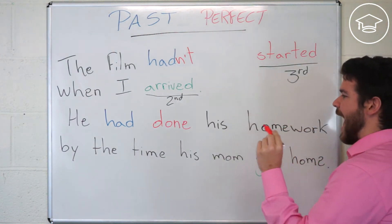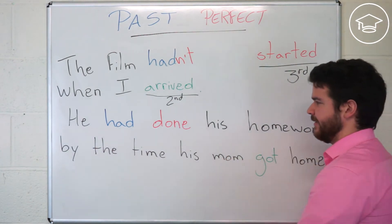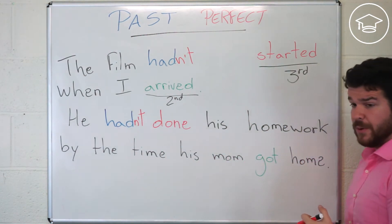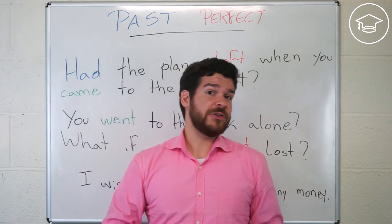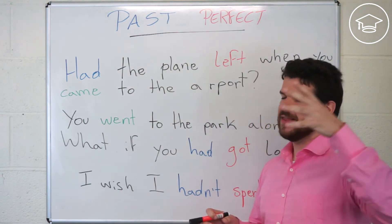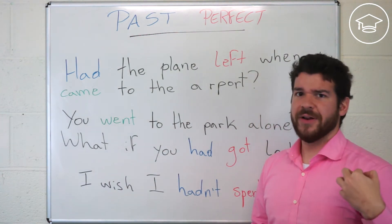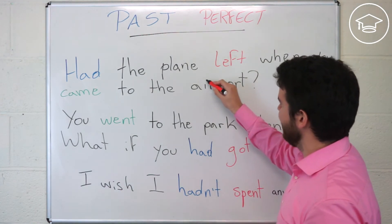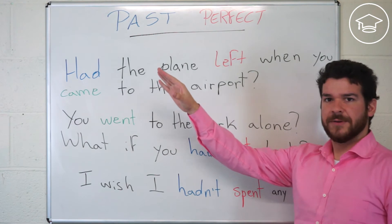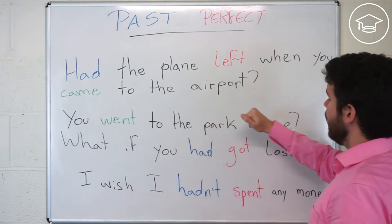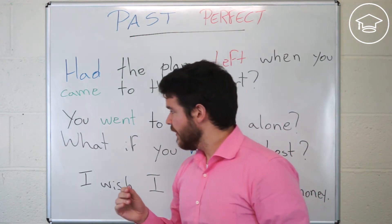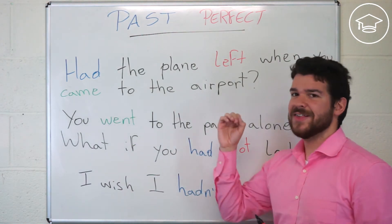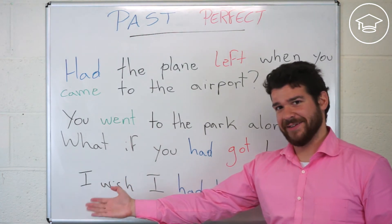Second example: 'He hadn't done his homework by the time his mom got home' — so he was in trouble! Now for questions with the past perfect — something that happened in the past but before something else happened. 'Had the plane left when you came to the airport?' You can add 'already.' You can answer: 'No, it hadn't' or 'Yes, it had' — and then you missed the flight.